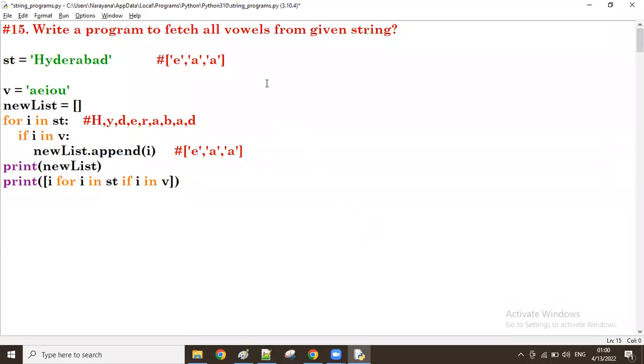Good afternoon guys. In the previous example we saw how to fetch all vowels from a given string. We took one string and fetched only vowels by taking the vowel string and comparing each character. When a character is available in the vowels, we take it into the new list.